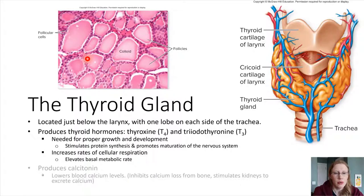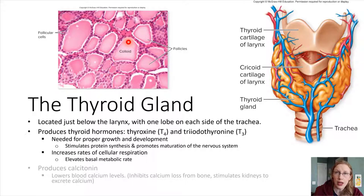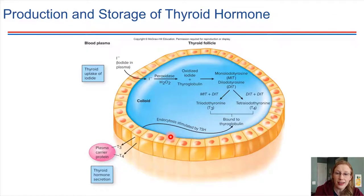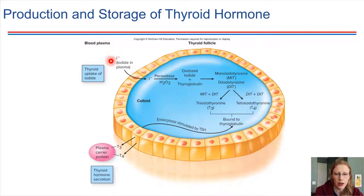Zooming in on one follicle and looking at what's happening inside the colloid — keep in mind there is a blood supply to this gland, so there are blood vessels that innervate through this tissue. That blood supply is very critical because it's the thing that's bringing iodine to the thyroid. The space surrounding this follicle would be blood plasma, and that's where iodine is found.